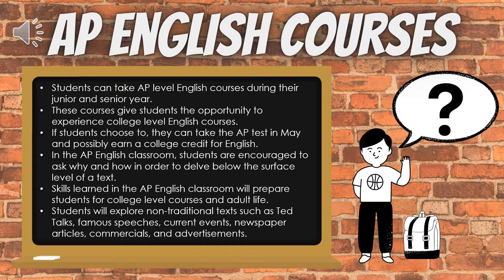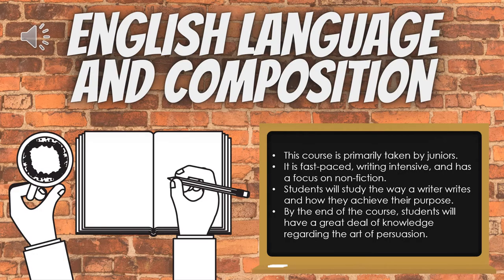Now let's talk about the two types of AP English courses students can take. The first course is English Language and Composition, also known as AP Lang. This is primarily taken by juniors. It is a fast-paced, writing-intensive course with a focus on non-fiction. Unlike other English classes, students study the way a writer writes and how they achieve their purpose. Students will leave this course knowing more about the art of persuasion.